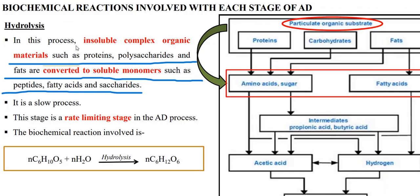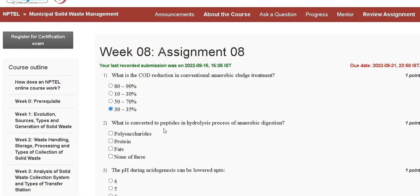In this process, insoluble complex organic material such as protein, polysaccharide, and fats are converted to soluble monomers such as peptides, fatty acids, and saccharides. So the correct answer for question number two is option A, polysaccharide.